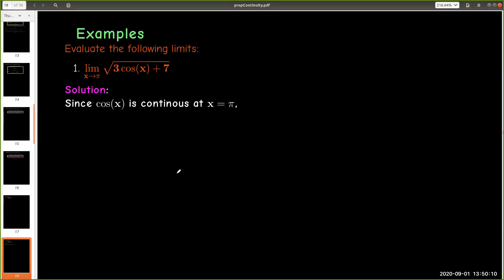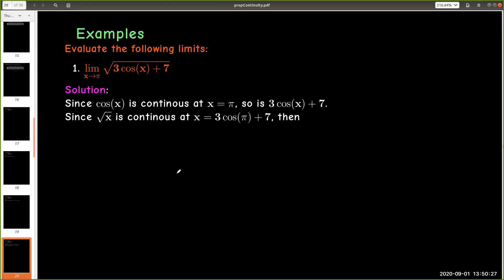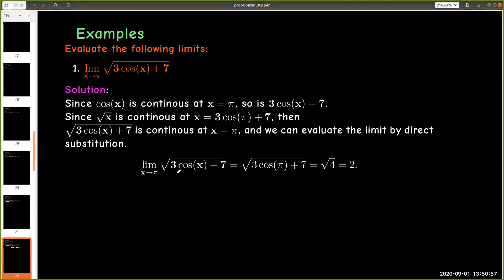We know that cosine of x is continuous at x equals pi. And so if I take cosine of x and multiply it times 3 and add 7, from our properties of continuous functions, it's also going to be a continuous function. Furthermore, radical of x is continuous on its domain and 3 cosine pi plus 7 equals 4. So it's going to be continuous at x equals 4. So the composition, the square root of 3 cosine of x plus 7, is continuous at x equals pi. So now we can just evaluate using direct substitution. And so the limit value is going to be 2.